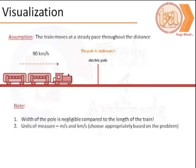Let us now begin visualizing the problem at hand. The first observation we need to make is that the pole would have a negligible width compared to the length of the train that is passing by it. So, we could easily ignore the additional distance in consideration.